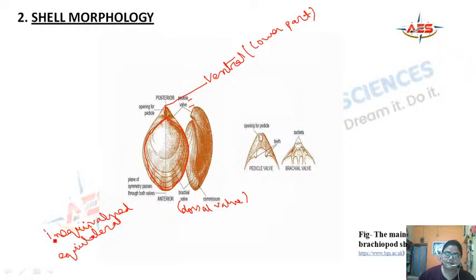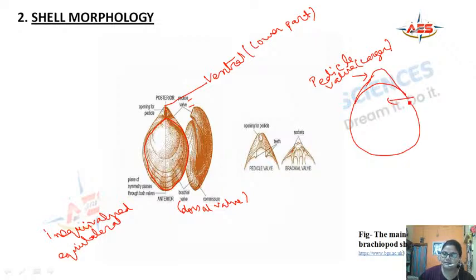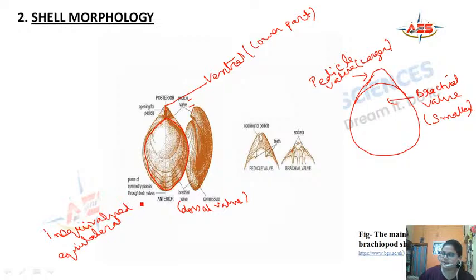Inequivalved means the valves are not of equal size: the pedicle valve (ventral) is larger and the brachial valve (dorsal) is smaller. Equilateral means the shell margin is equal on all sides, giving the shell bilateral symmetry.